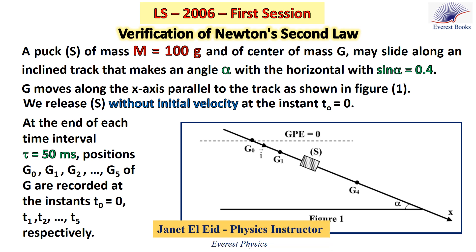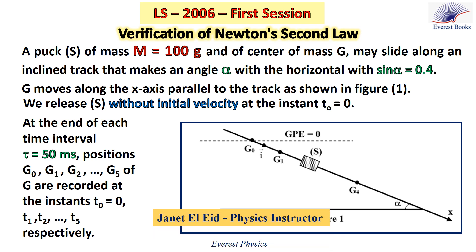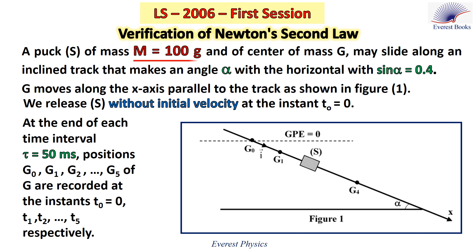In this exercise, we are going to verify Newton's second law. A puck S of mass 100 grams and center of mass G may slide along an inclined track that makes an angle alpha with the horizontal, where sine alpha equals 0.4. G moves along the x-axis parallel to the track as shown in figure 1.